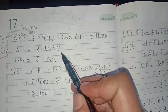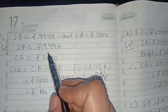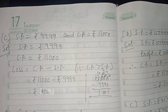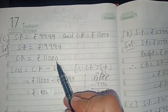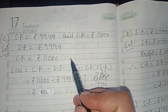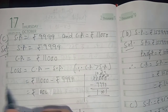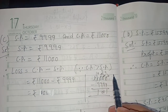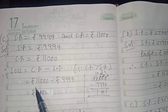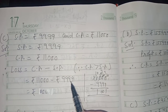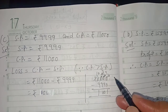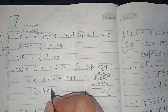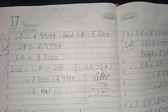Part c: SP is rupees 9,999 and CP is rupees 11,000. Writing both values — SP rupees 9,999 and CP rupees 11,000 — we compare and find CP is greater, so there is a loss. Therefore loss equals CP minus SP, which is rupees 11,000 minus rupees 9,999. The answer is rupees 1,001, and this is the loss.